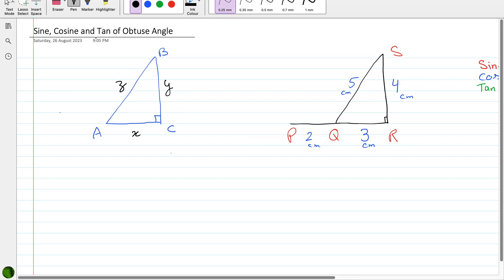In this video we'll be covering sine, cos, and tan of obtuse angles. Before we go into depth, let's have a quick revision of acute angles. If we talk about sine a, it is perpendicular over hypotenuse. Cos a is base over hypotenuse, that is x over z, and tan a is perpendicular over base, which is y over x.